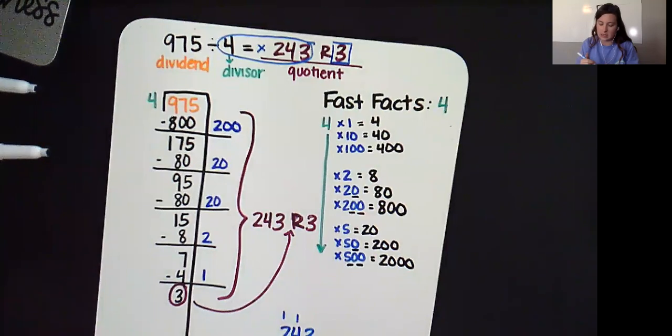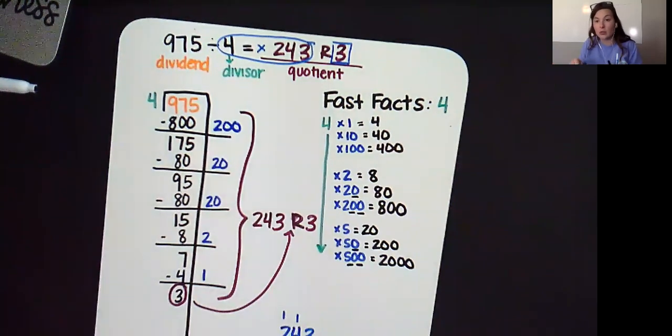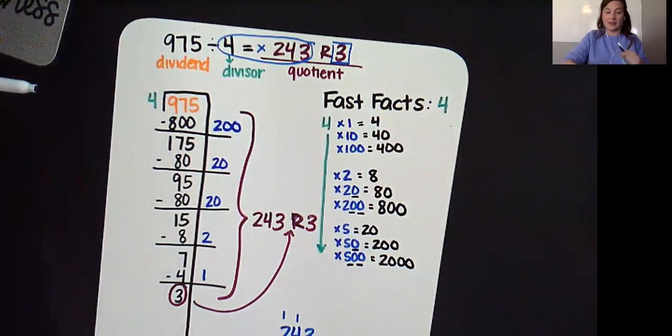We did it, guys. Fantastic. I will tell you on your quick check that you should take next, there are no remainders. If you get a remainder on those, you did it wrong. So, heads up. You're going to need to know how to work with remainders next week. This week. Just practice your procedure. Okay. Bye, guys.